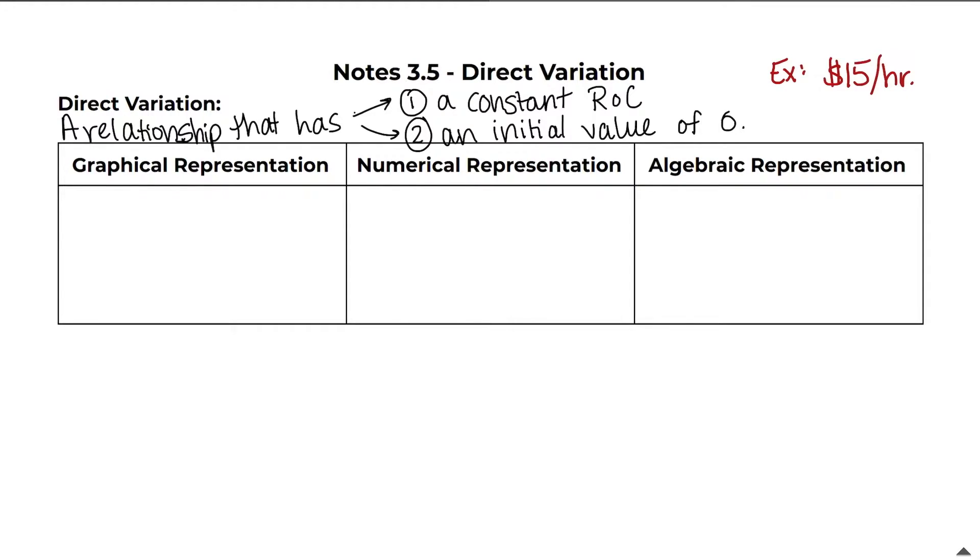Your graphical representation would look as follows. We would put time on the x-axis because time is the independent variable. We would put pay on the y-axis because your pay depends on how many hours you work. If you don't work, you don't make any money. If you work zero hours, your pay is zero. So this right here is your initial value. Do you see how you are starting at zero?